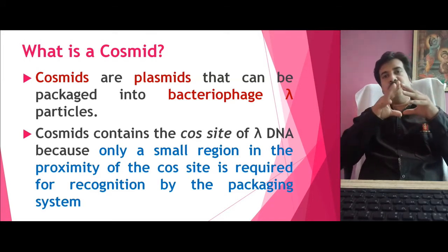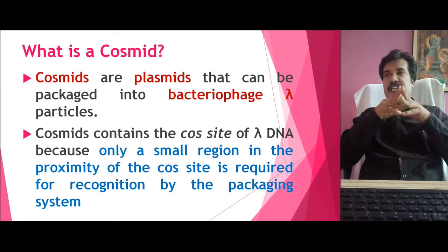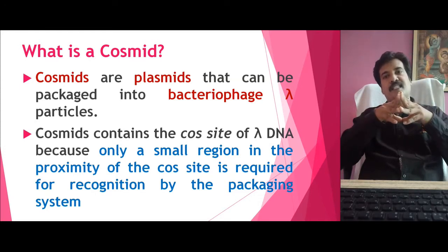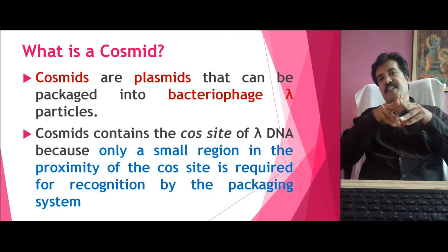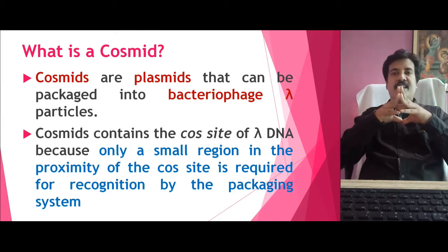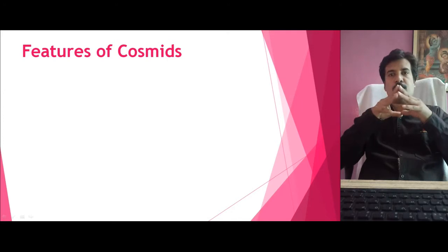What we are taking is all the characteristics of the Plasmid, and we are integrating them into the Lambda Phage especially at the Cos site. The Cos site is a very small region of the Lambda Phage where it can be easily recognized and packed by the viral particle system, that is the Lambda Phage particle. We are integrating the foreign DNA between this Cos site and we are able to generate a Cosmid. That is, the Cosmid is basically a type of Phasmid; it carries both the characteristics of the Plasmid and a Lambda Phage.